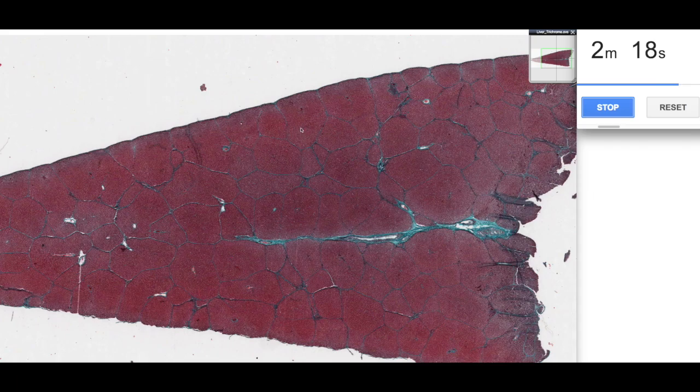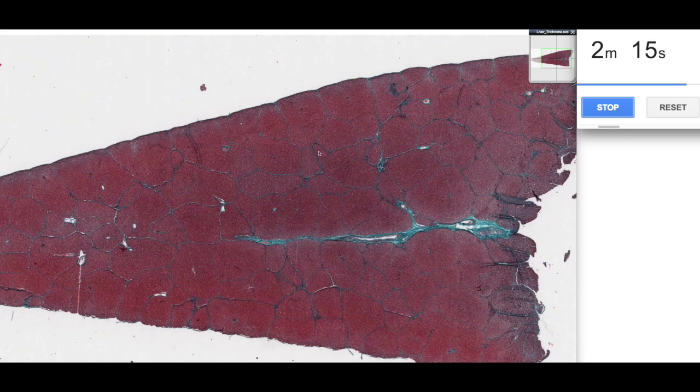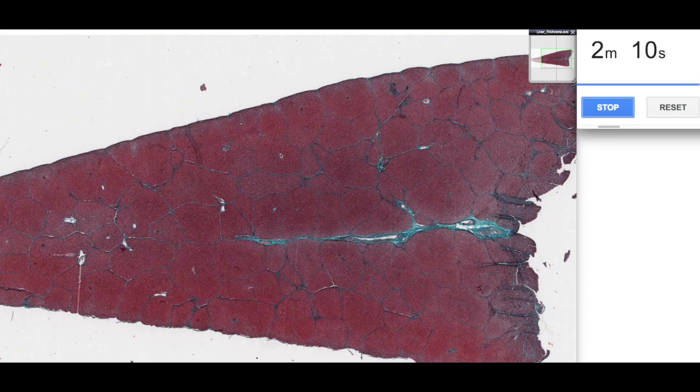So then there's another lobule over here and here and so on. You can see multiple lobules within this liver. So these are the main functional areas of the liver.